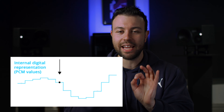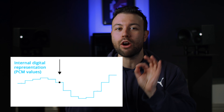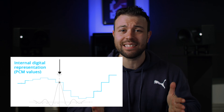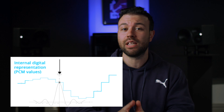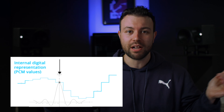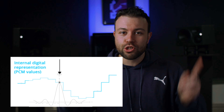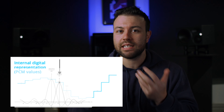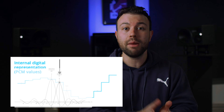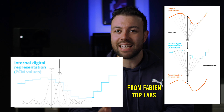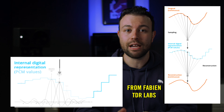All limiters measure their max peak and reduce gain relative to it. The difference is in how various limiters interpret that signal. An analog limiter measures the level of a signal which is a continuous waveform, so it always has a true reading on it, whereas digital limiters measure the level of a signal from the PCM encoded data.